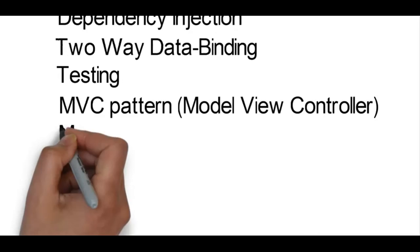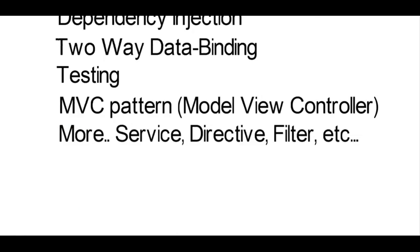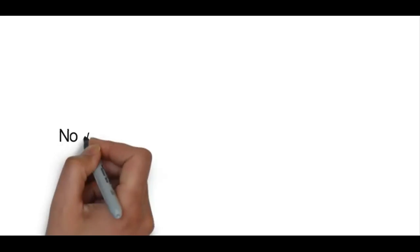Next is the MVC pattern — model, view, and controller. This pattern is followed in the AngularJS framework as well. You need to segregate your components into model, view, and controller. Mapping and managing this MVC pattern in AngularJS will be automatically handled by the framework itself. And there are more features such as services, directives, filters, and so on.